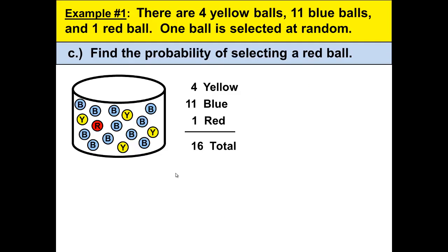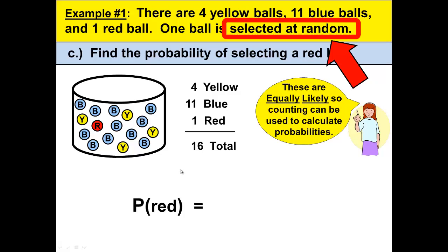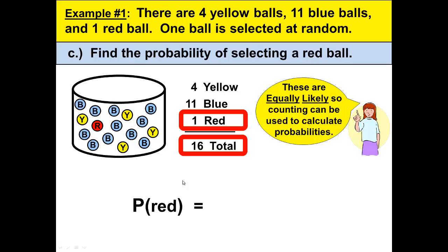Now let's look at letter C. Find the probability of selecting a red ball. Probability of red. Again, it's selected at random, so they're equally likely. So that means there's one red out of the 16. So that's 1 over 16, a 1 in 16 chance, which is 0.0625.